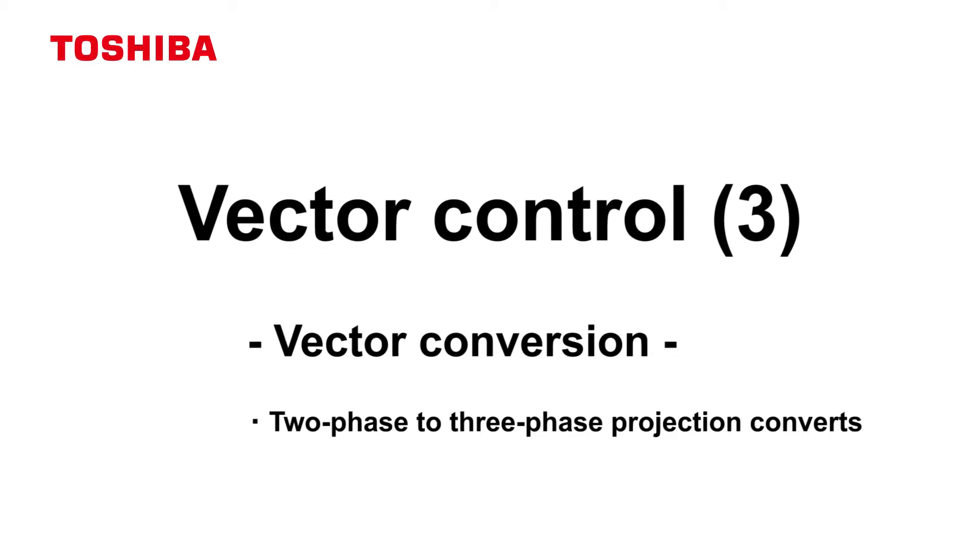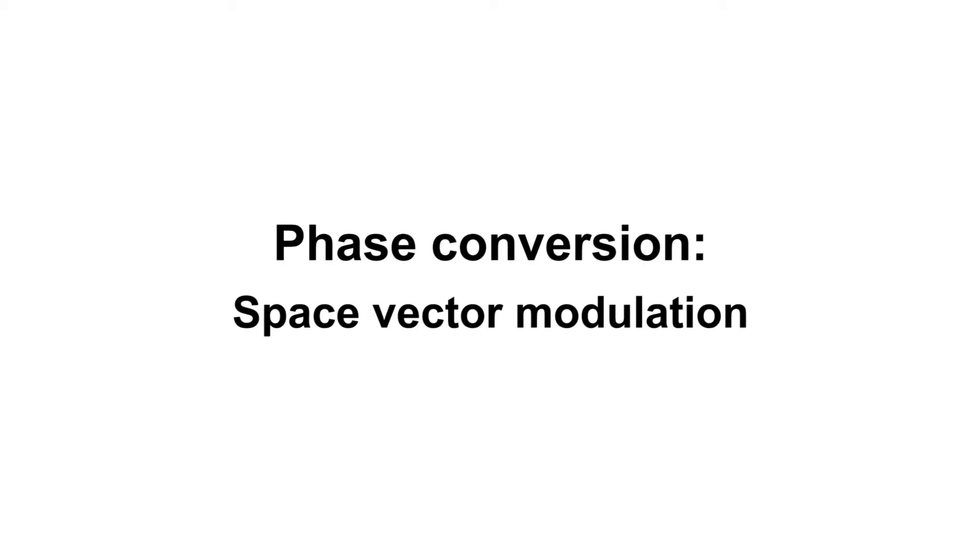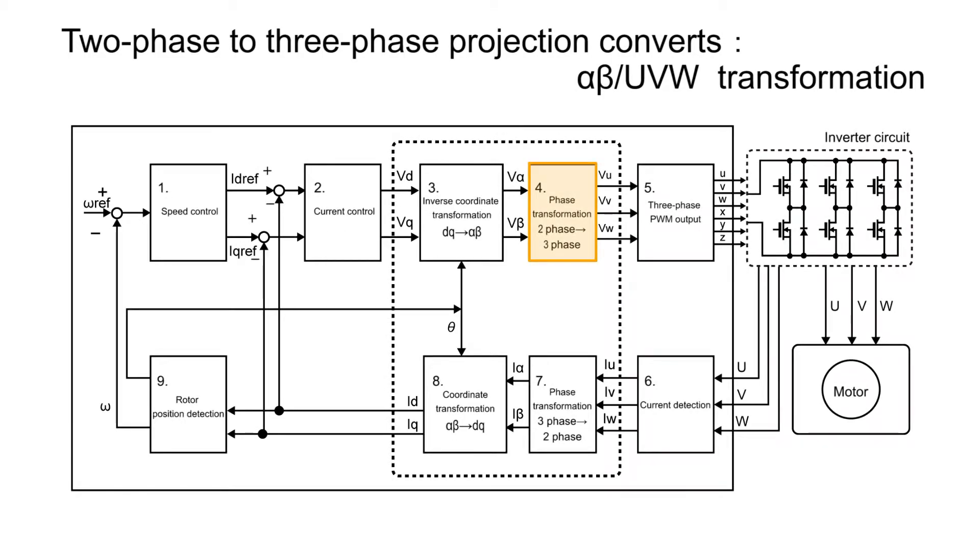In this chapter, we describe space vector modulation. Two to three phase projection converts the voltages at stationary coordinates, V-alpha and V-beta, into three phase voltages V-U, V-V, and V-W. In this type of conversion, inverse Clark transformation and spatial vector transformation are commonly used. In this video, we describe spatial vector transformation.